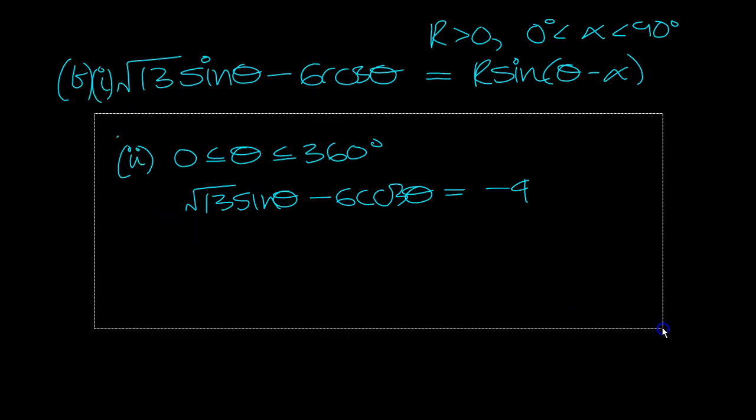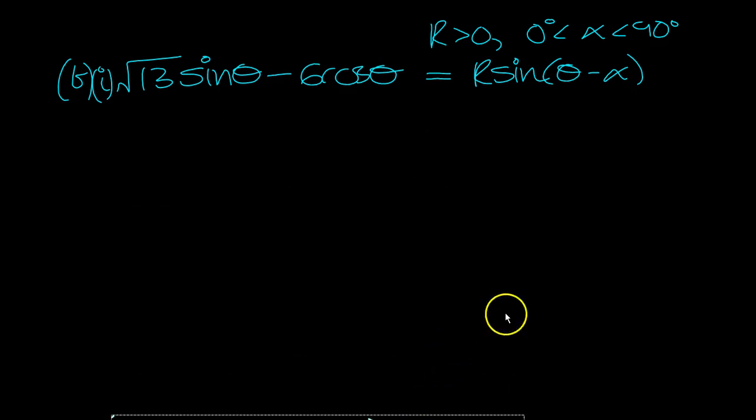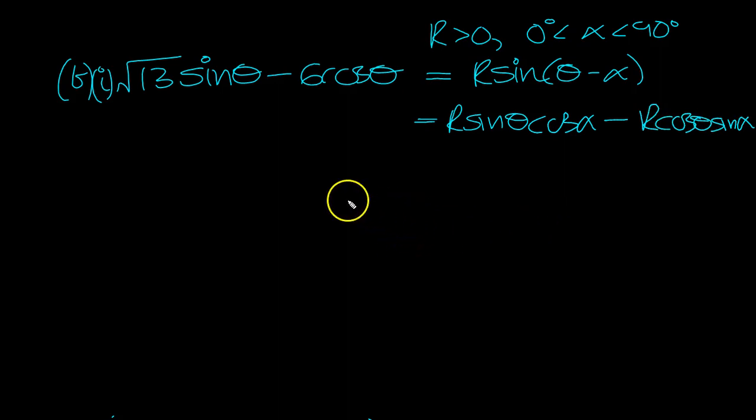Part B. Let's have a look at this then. So what we got, this is equal to then sin A minus B is sin A cos B minus cos A sin B. So we get root 13 is equal to R cos alpha, and minus 6 is equal to minus R sin alpha, so we can drop the negative.